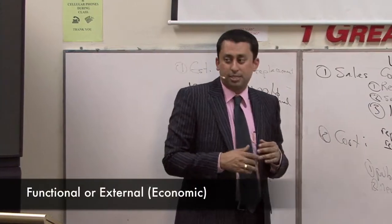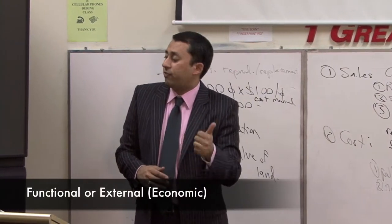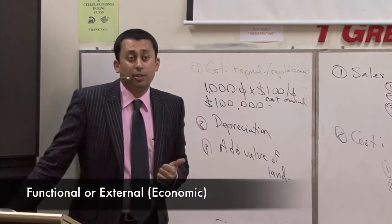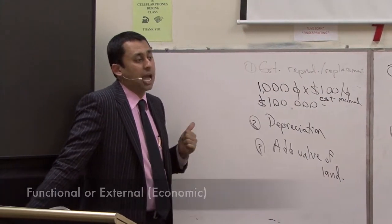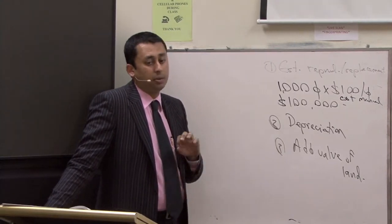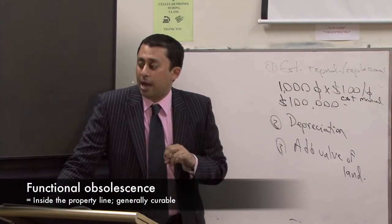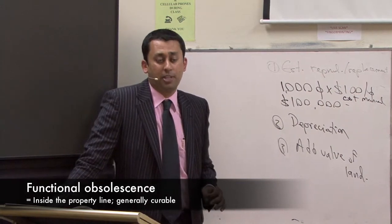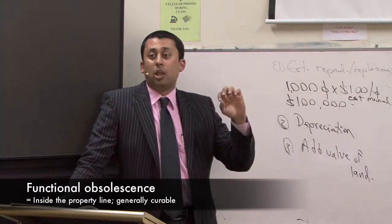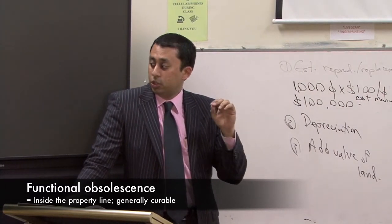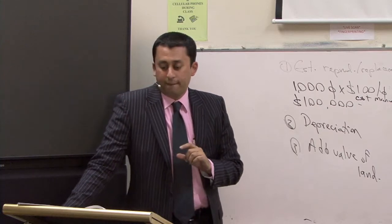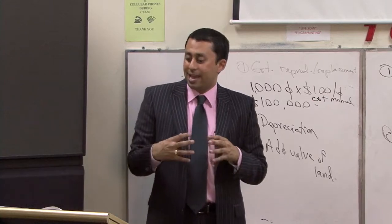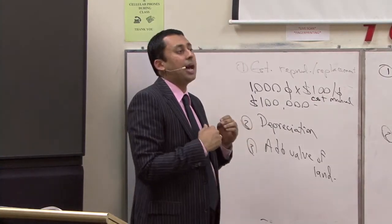There are two types of obsolescence: functional obsolescence and external obsolescence. Next to functional obsolescence, I would write the term 'inside property line.' Functional obsolescence is obsolescence that exists inside the property line. Right below that, I would write 'usually curable.' Functional obsolescence is usually curable, and it exists inside the property line.